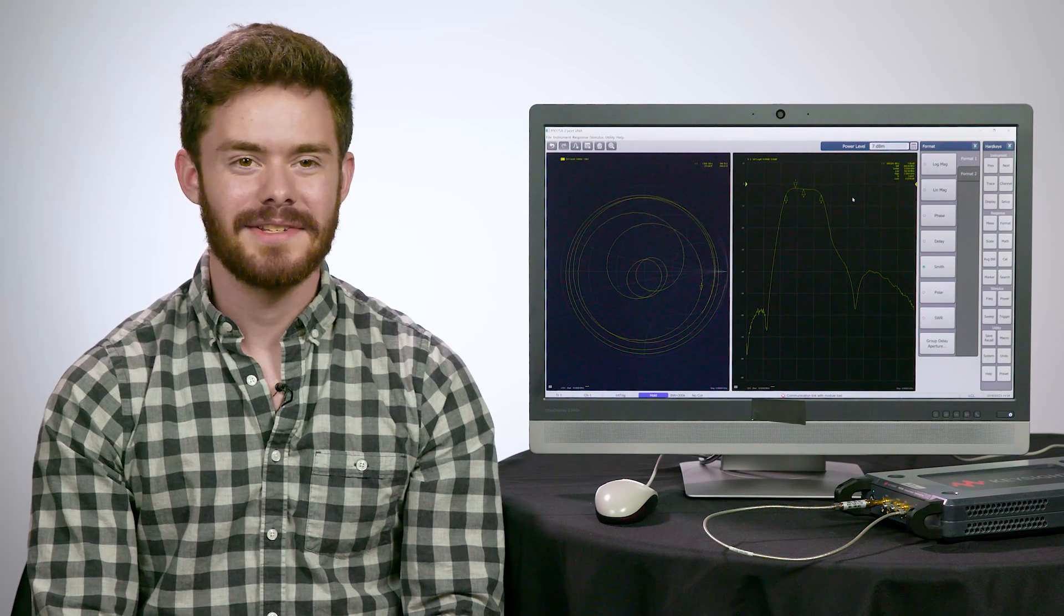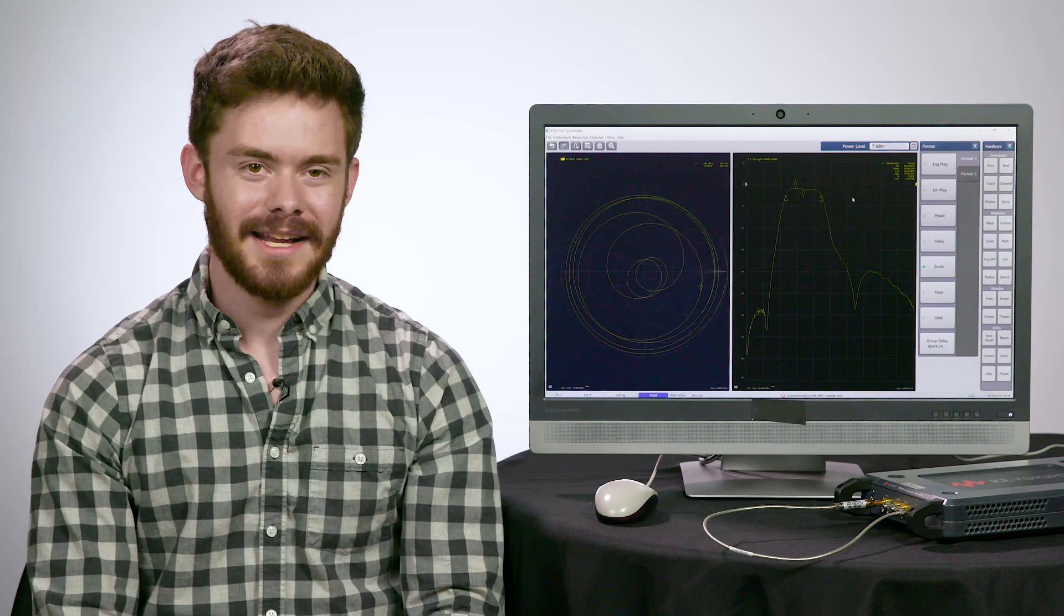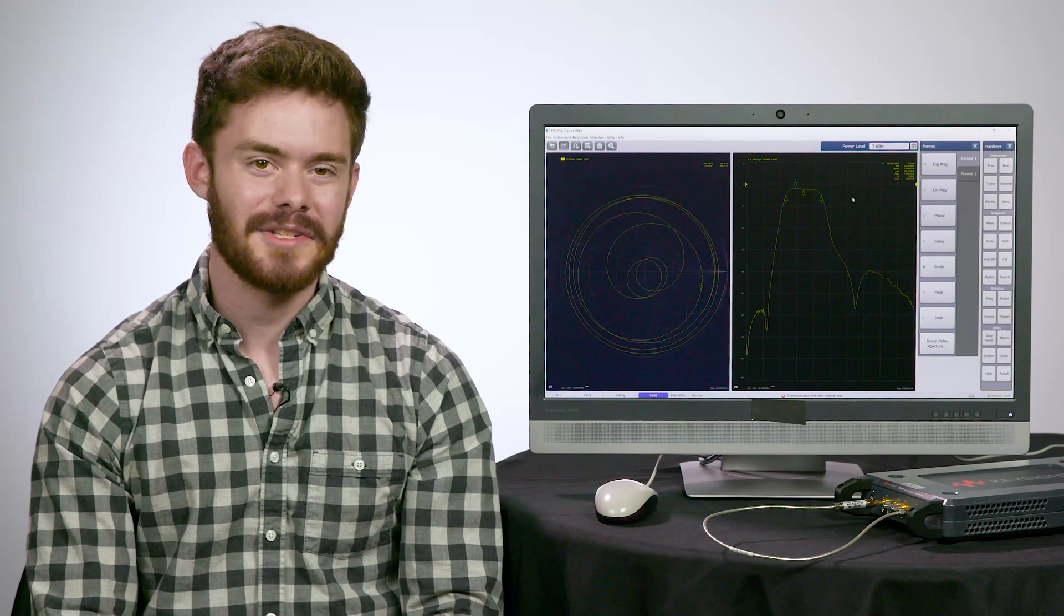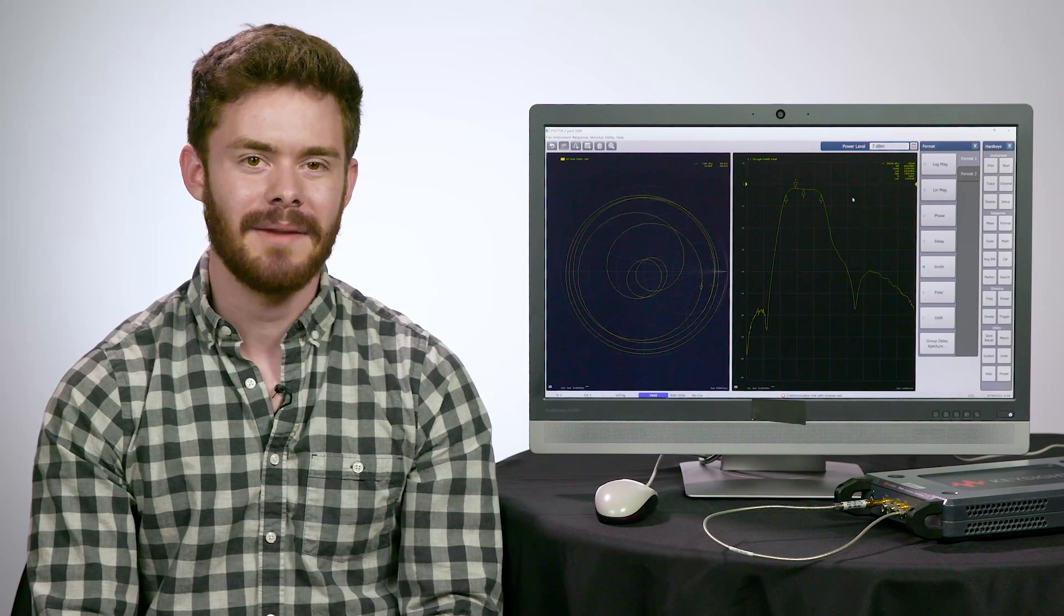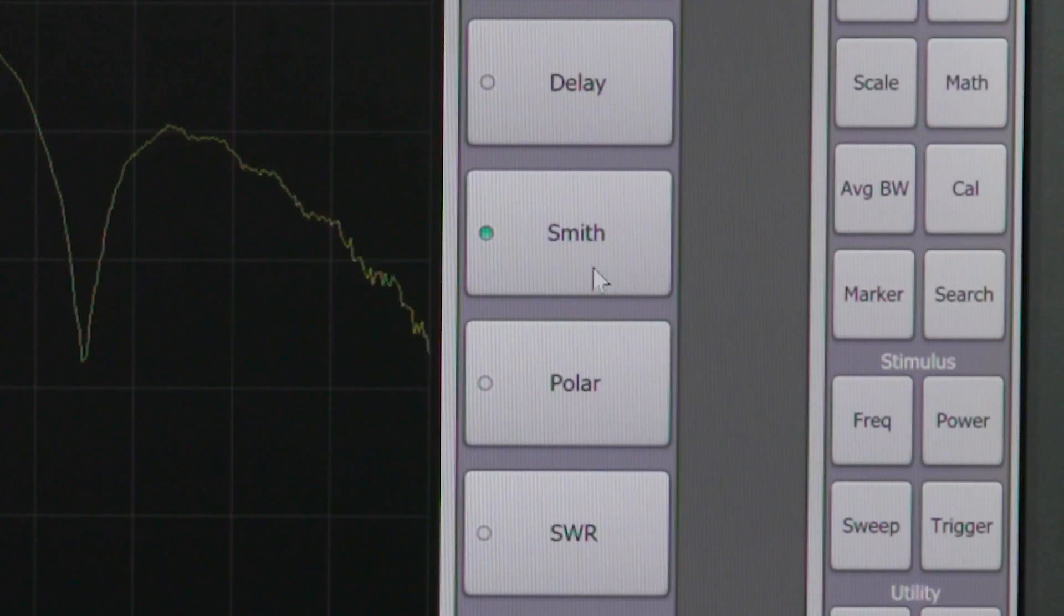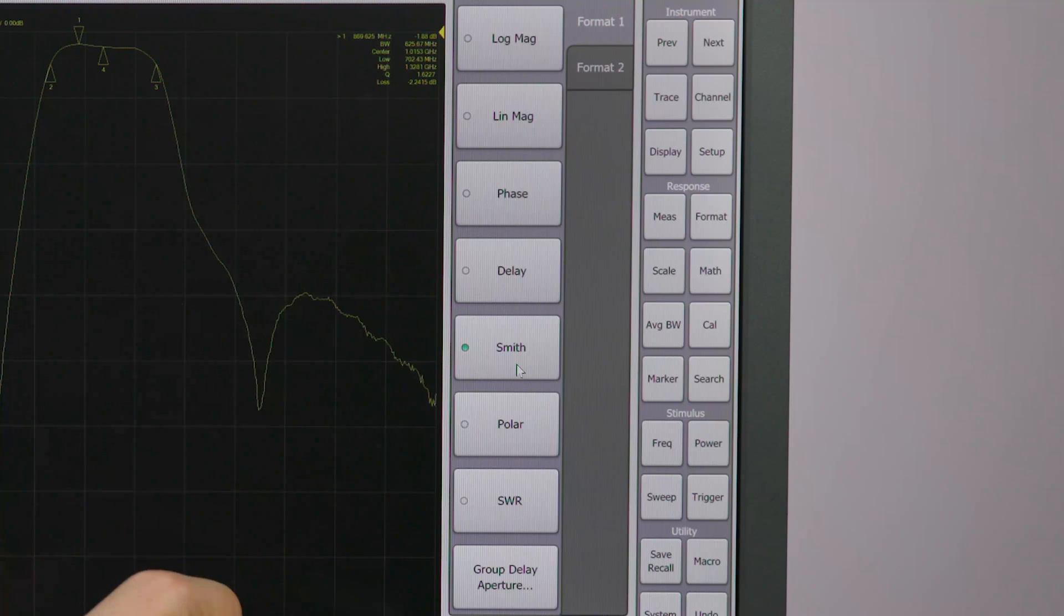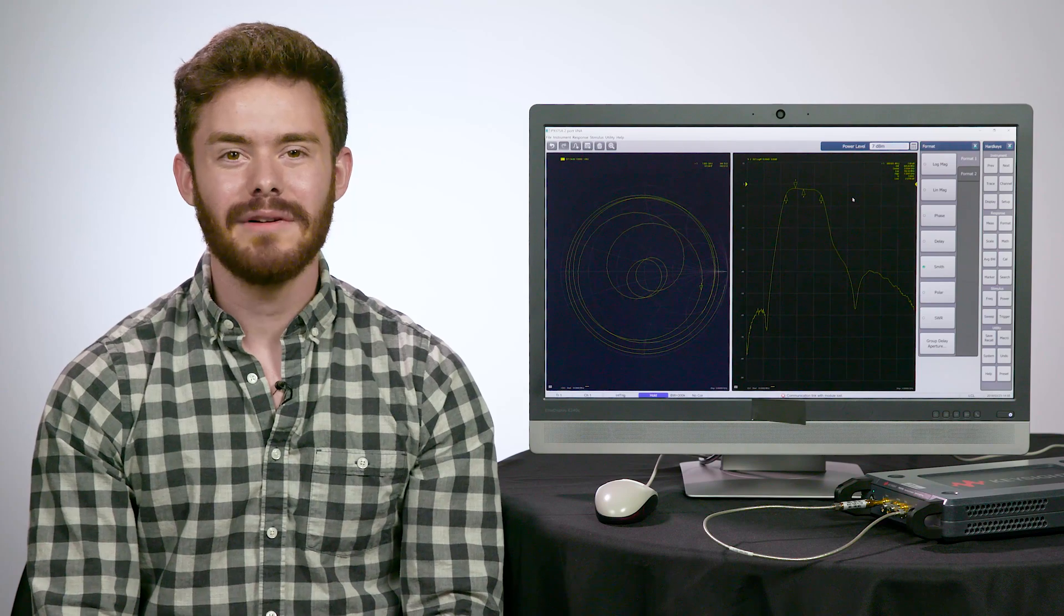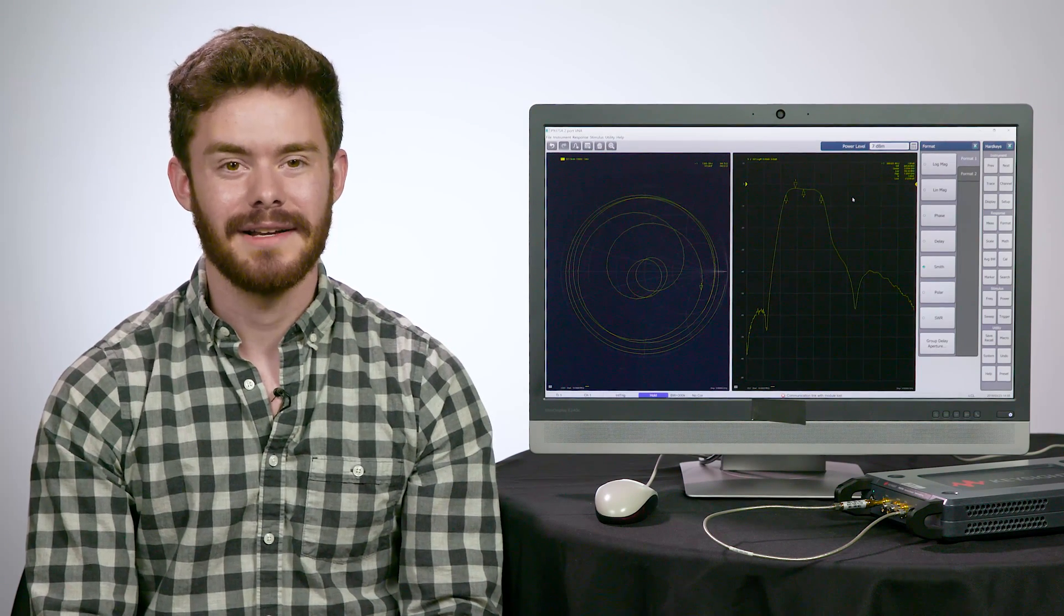You can also view these traces in different formats. Let's say I'd like to see the Smith chart for this S11 trace so that I can characterize the matching of this bandpass filter we're testing. So I'll select Format and Smith. You can see all the different formats available, the standard log mag, a phase chart, polar, delay, and so on. These different views help to characterize the different aspects of your device.